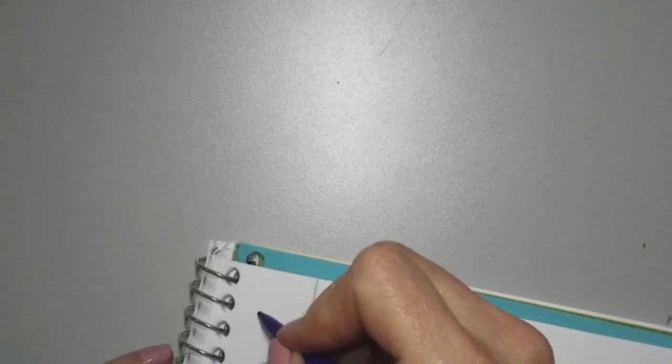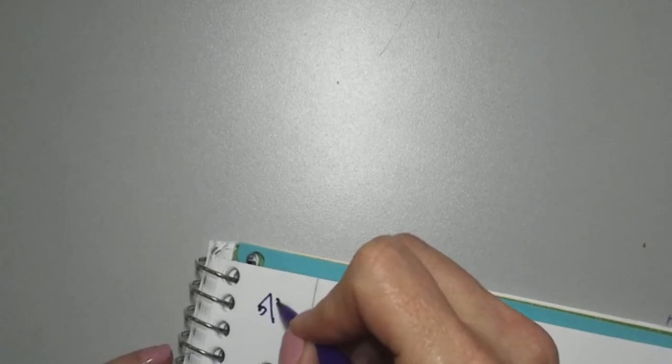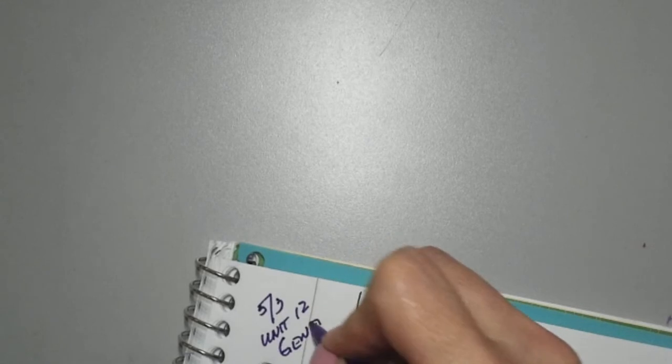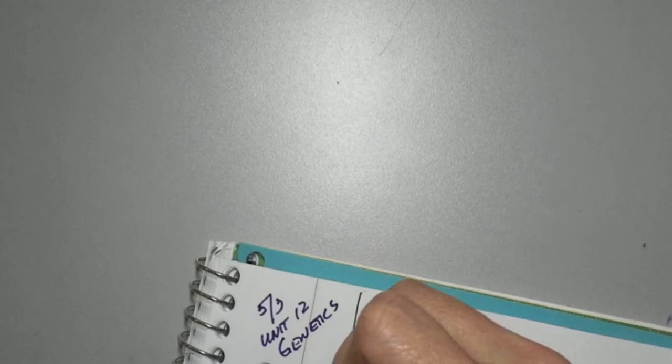Okay, so take a minute, set up your page. Again, if you guys are online, you need to pause this. Anytime you need to pause this, do that. So this is 5-3, unit 12, Genetics, period 7.